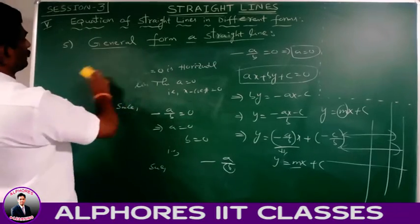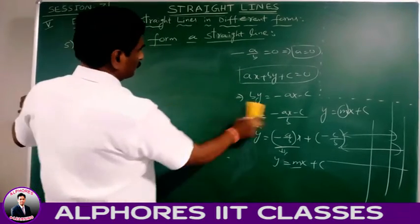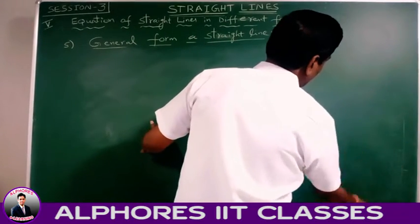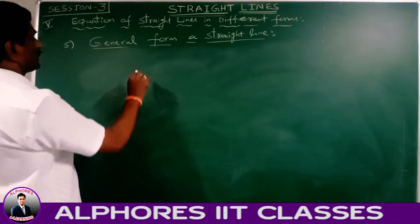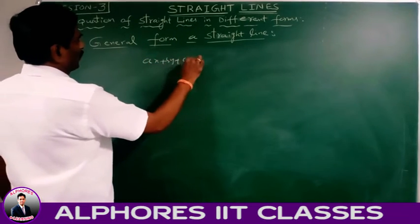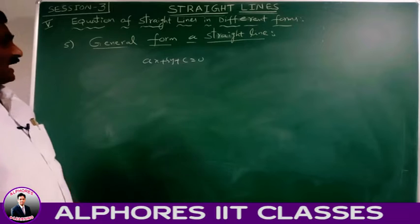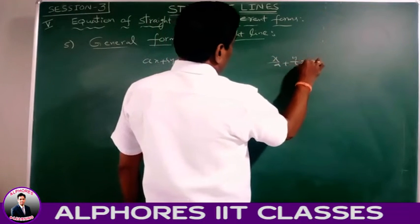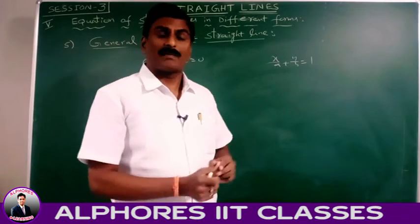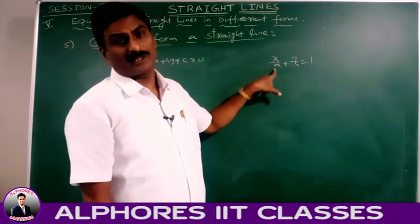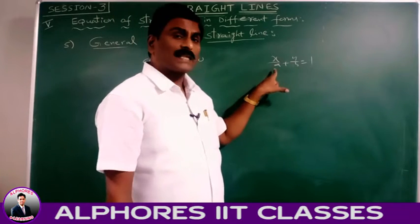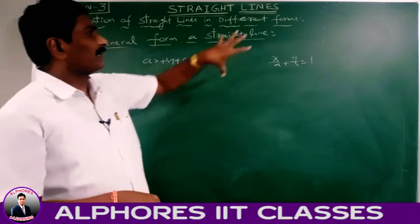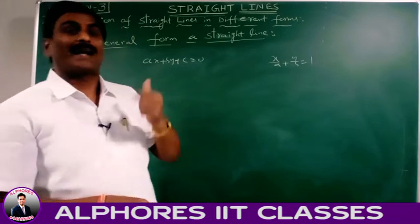Point 5: what are the x and y intercepts of the line ax + by + c = 0? We know the intercept form is x/a + y/b = 1, where a is the x-intercept and b is the y-intercept. So we reduce the given equation into intercept form and use that to find the x and y intercepts.